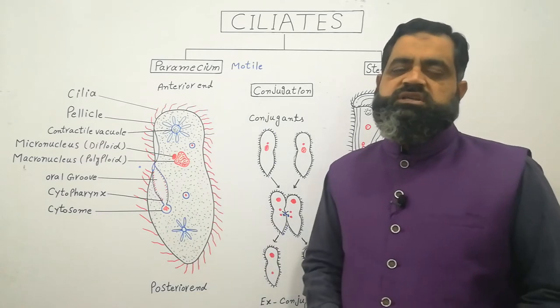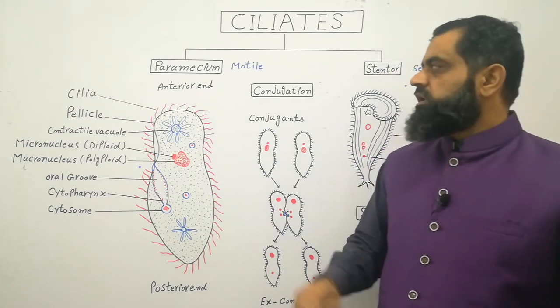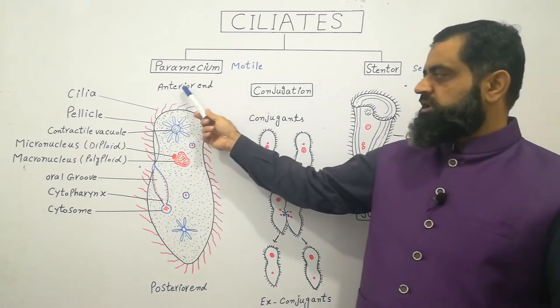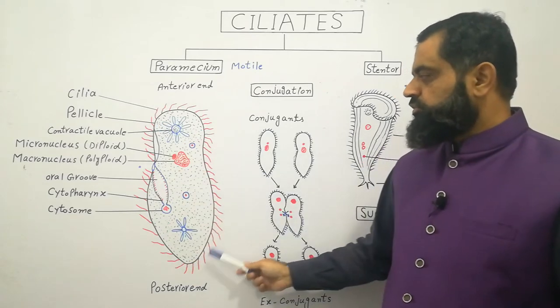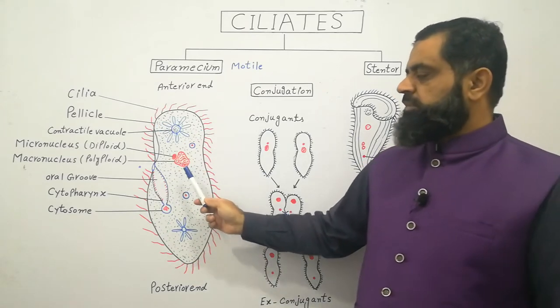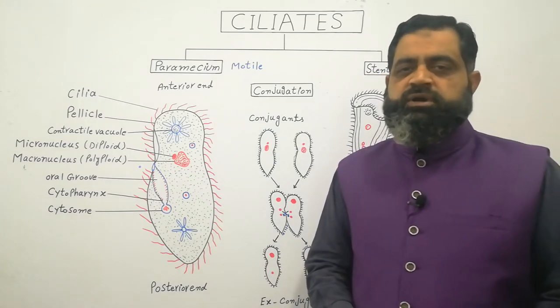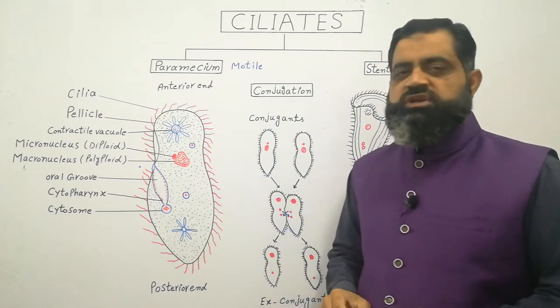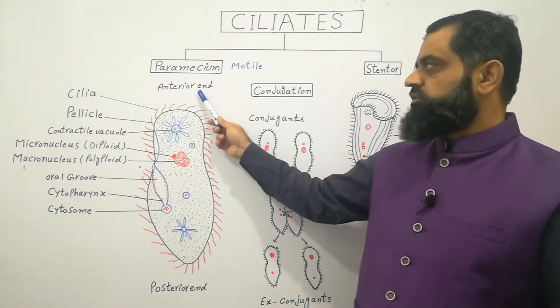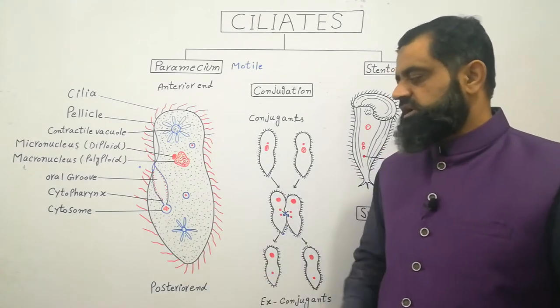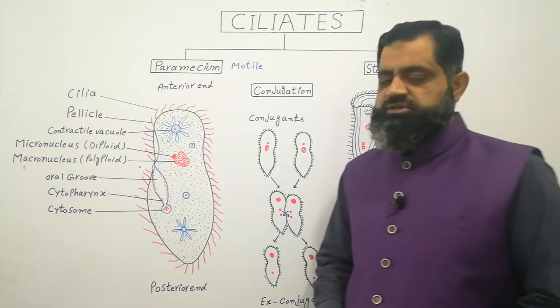The best example of motile ciliate is paramecium. The structure of paramecium I have drawn on the whiteboard. This is the microscopic organism which can only be seen by microscope but I have enlarged it so that we can show the detail structure. This is the anterior end of the paramecium and this is the posterior end of the paramecium.